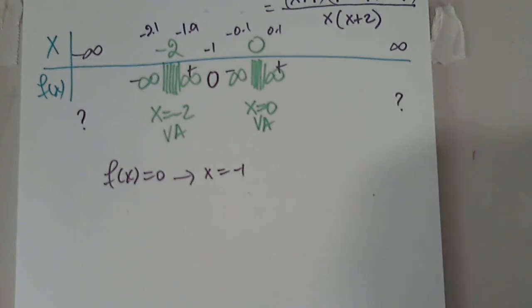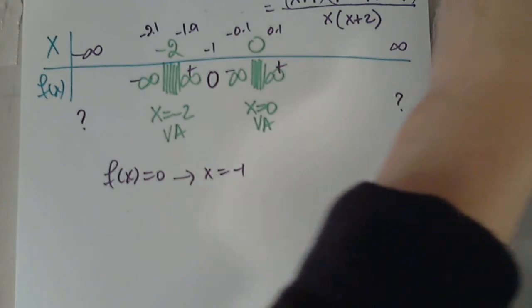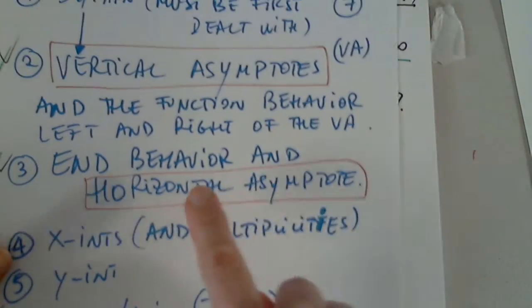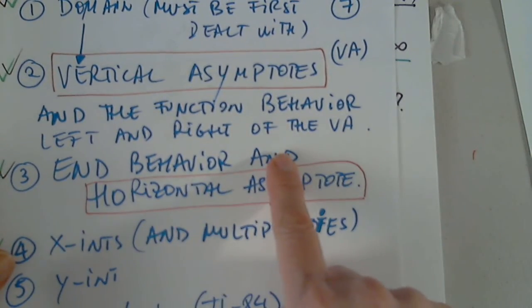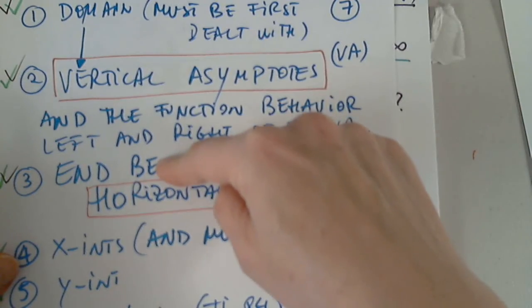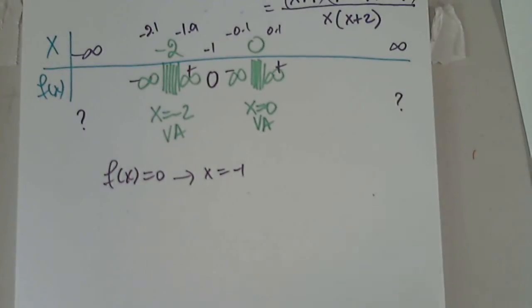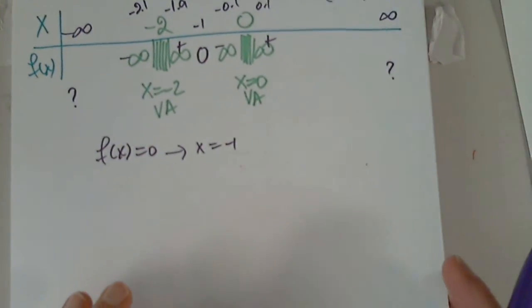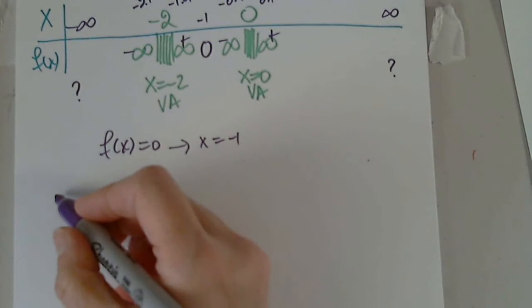Final step. Like before, if you remember the horizontal asymptote. Horizontal asymptote gives the end behavior. If there is no horizontal asymptote but slant, the slant asymptote will give the end behavior.